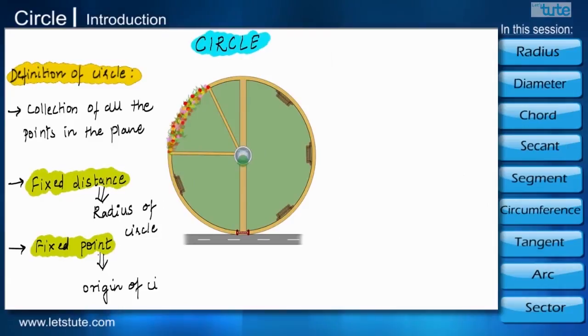If you see, there is a path which connects the fountain and the entrance gate. This path can be called as the radius.